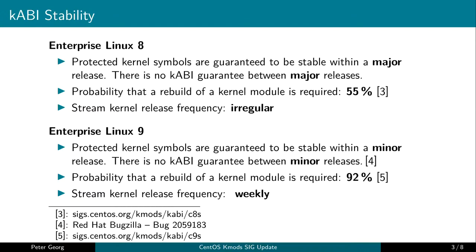I looked up some statistics from our online plots showing how often we have to rebuild kernel modules. With CentOS Stream 8, there's only a 55% chance we need to rebuild a module. With stream 9, it's 92%. That's bad. Especially since with stream 9 we get about one new kernel every week, whereas stream 8 currently releases are quite irregular — maybe one in the last four months.